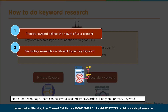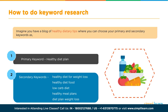Always go with two keywords rather than just one to give yourself a chance to rank for at least two relevant terms. For a webpage, there can be several secondary keywords but only one primary keyword. Secondary keywords can be relevant to the primary keyword and to the content, giving you a better opportunity to be found in search. For example, if the primary keyword is 'healthy diet plan', secondary keywords would include 'healthy diet for weight loss', 'healthy diet food', 'low carb diet', 'healthy meal plans', and 'diet plan weight loss'.